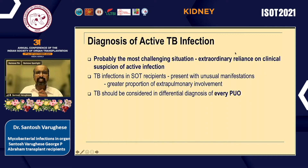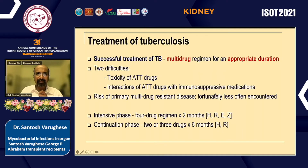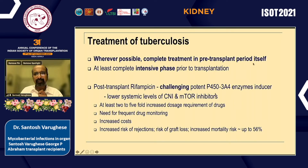The most challenging situation remains reliance on clinical suspicion — every PUO requires consideration of TB, looking for both pulmonary and extrapulmonary disease. Treatment is multi-drug for appropriate duration. The two main difficulties are toxicities and drug interactions. Multidrug-resistant TB is fortunately less commonly encountered. Treatment duration is roughly the same as in the general population: four drugs for two months, then two to three drugs for six months. If using rifampicin, the recommendation is to complete treatment in the pre-transplant period wherever possible, completing at least the intensive phase — a minimum two months of INH and rifampicin — prior to transplantation.